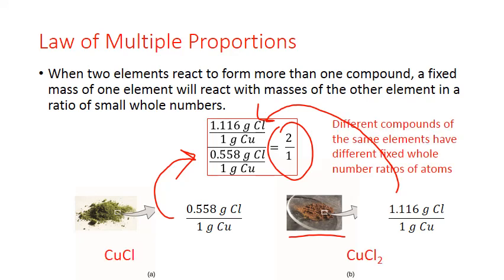This was the basis of determining the chemical formulas of these compounds as ratios of atoms. So the first compound is a one to one ratio of copper and chlorine while the second compound is a one to two ratio. Another way of stating the law of multiple proportions is that different compounds of the same elements have different fixed whole number ratios of atoms.